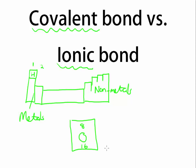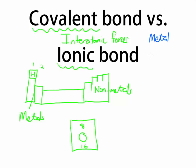When an element reacts with something else on the periodic table, a bond can form. Covalent and ionic bonds are therefore examples of inter-atomic forces — forces between atoms. If I go on an international flight, I am flying from one nation to another nation. Similarly, inter-atomic means forces between atoms. There is a third inter-atomic force — the metallic bond — but this video focuses on covalent bonds and ionic bonds.